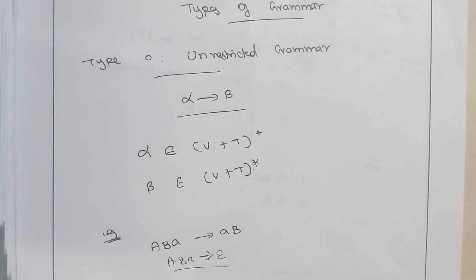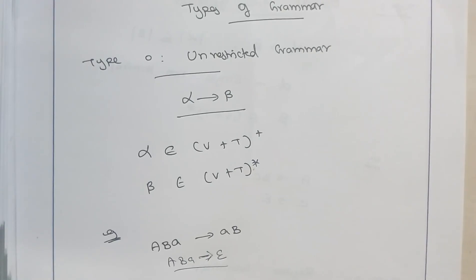There is no restriction over alpha and beta, so this is called a type 0 grammar. The mathematical model that accepts this kind of type 0 grammar is called a Turing machine. A Turing machine contains an infinite tape as a memory unit, and the tape can either move left or right one cell at a time. The Turing machine accepts all kinds of language that are solvable by a computer, so we call that an unrestricted language.